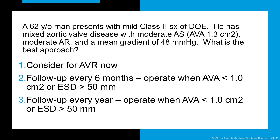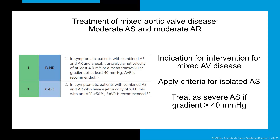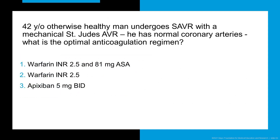For mixed aortic valve disease with moderate aortic stenosis and moderate aortic regurgitation causing class II symptoms: based on data from Mayo Clinic, the indication for mixed aortic valve disease applies the same criteria as isolated aortic stenosis. Mixed aortic valve disease is treated the same way as severe aortic stenosis if the mean gradient is greater than 40 mmHg.